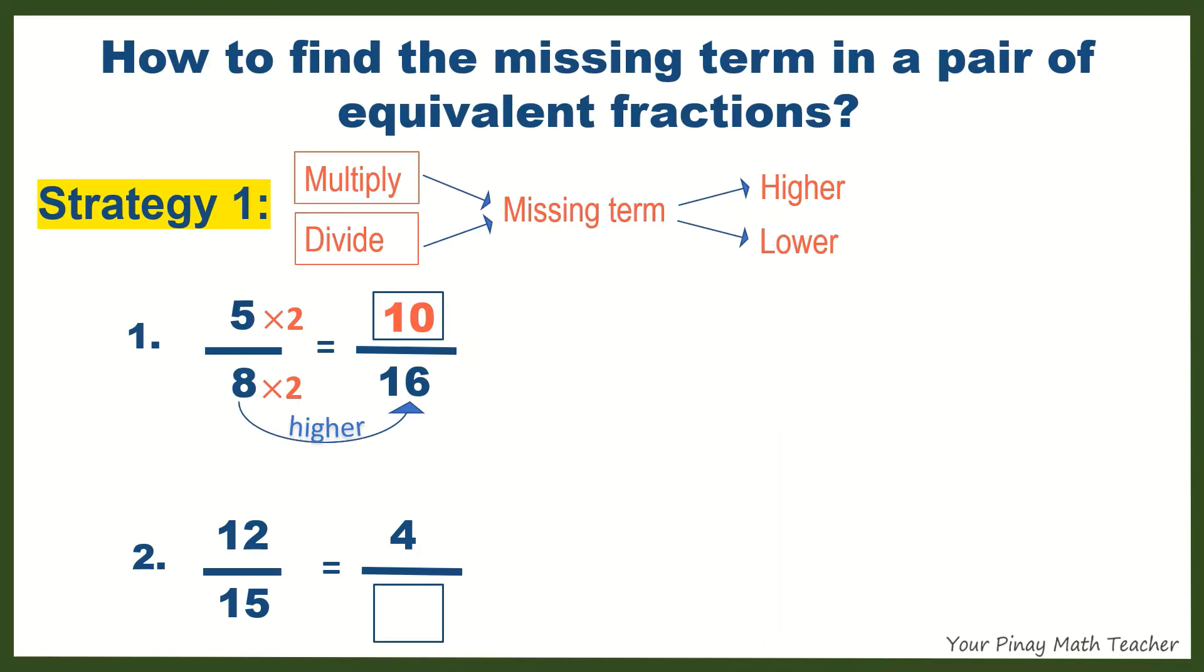Number 2: 12 gets lower to 4. This means that you have to divide 12 by a certain number, which is 3, to get 4. If in case you don't think of 3 right away, you can also divide 12 by 4, which is 3. And then do the same with 15. Divide 15 by 3, so the missing term is 5.